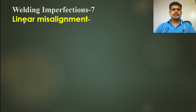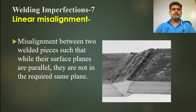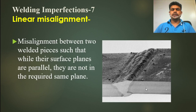Welding imperfection: linear misalignment. What is linear misalignment? It is a misalignment between two welded pieces such that while their surface planes are parallel, they are not in the required same plane. These two plates should be at the same level, but as we can see in the picture, one plate is in a down position and one plate is in an up position. This is simply called linear misalignment.